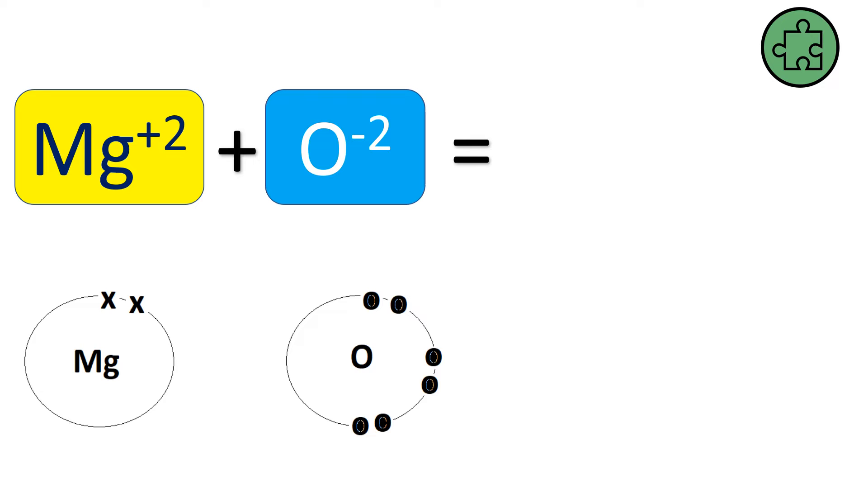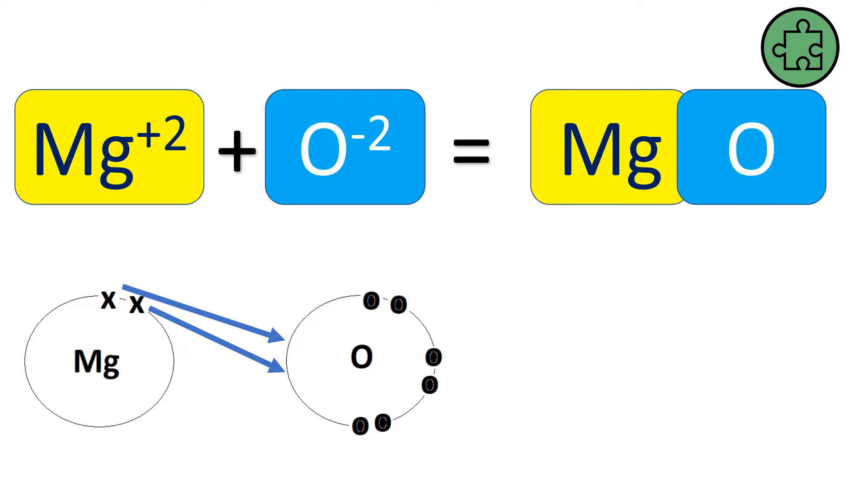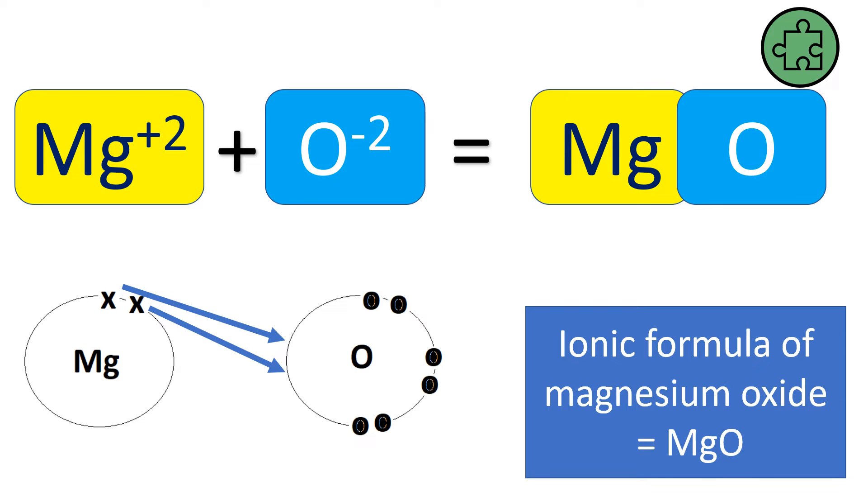What about magnesium and oxygen? Magnesium oxide. So magnesium wants to lose two electrons and oxygen wants to gain two electrons. Well that works perfectly doesn't it? Magnesium is going to hand over both its spare electrons to this oxygen. So one magnesium and one oxygen together are going to make two stable ions. So this ionic compound is MgO, one of each.